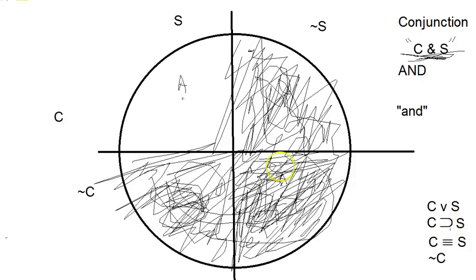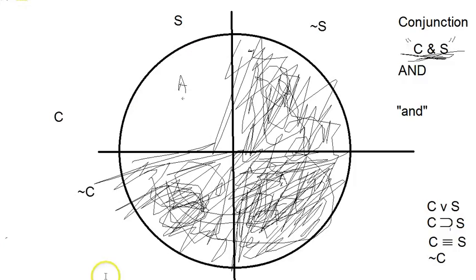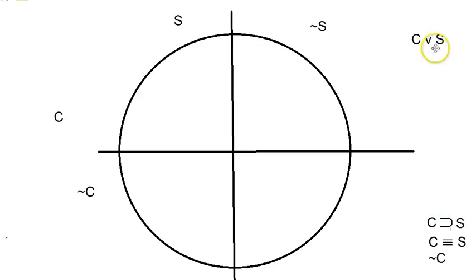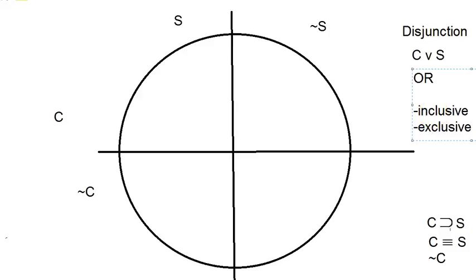Let's talk about our next operator — the disjunction, the little wedge, the 'or' operator. There are two types of disjunctions: inclusive or and exclusive or. The English word 'or' is always ambiguous between these two different logical meanings. There is another symbol — the wedge with a line underneath it — that represents the exclusive or, while the plain wedge is inclusive. But I'm not going to allow you to use the exclusive or symbol, because logicians prefer a clean, elegant system with as few symbols as possible.